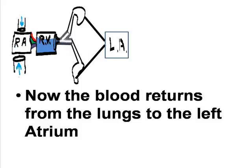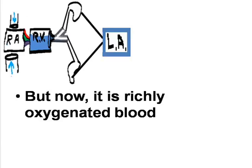Now the blood returns from the lungs to the left atrium. But now it is richly oxygenated blood.